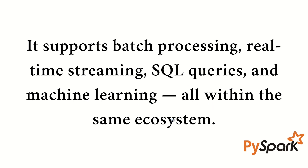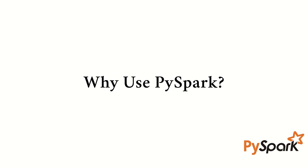In the case of Hadoop, we have multiple tools available like Hive, Apache Pig, and HBase — different tools for different use cases. In the same way, in the case of Apache Spark, we have multiple modules available which you can use for batch processing, real-time streaming, SQL queries, and machine learning all within the same ecosystem, and we don't have to install multiple tools. They are all available in the same tool.